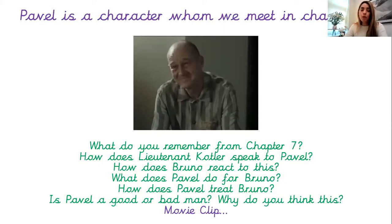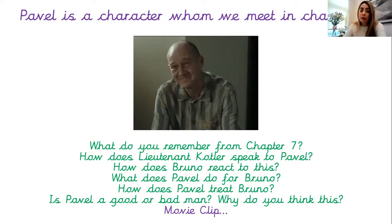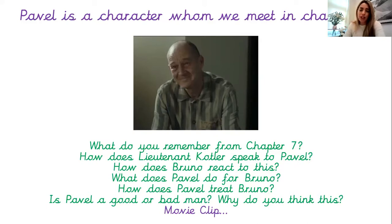Pavel is a character whom we meet in Chapter 7, and there is a little picture taken from the movie. What do you remember from Chapter 7? We know that Lieutenant Cutler is in Chapter 7, and we know that Bruno doesn't really like Lieutenant Cutler that much. Do you remember how Lieutenant Cutler speaks to Pavel? What does he say and how does he say it? And how does Bruno react? Do you remember what Pavel did for Bruno — what favour did Bruno ask, and what did Pavel go and do for him?